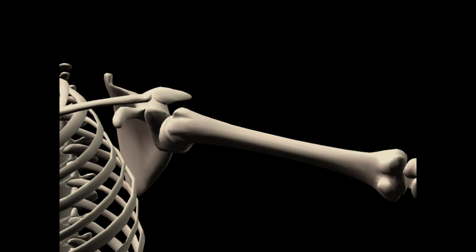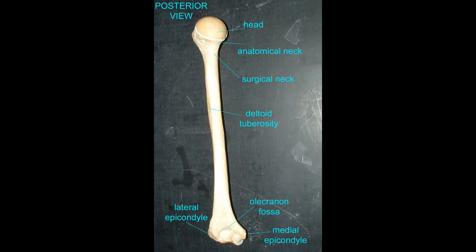About halfway down the shaft of the humerus is the deltoid tuberosity, where the deltoid muscle attaches.